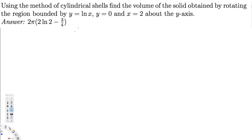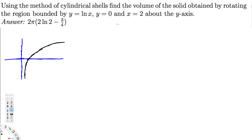First, we have to know the ln x graph, so let's draw that. The ln x graph goes from negative infinity to positive infinity. The region is bounded by y = ln x, y = 0 (that's just this horizontal line), and x = 2. So this is the region we are interested in.